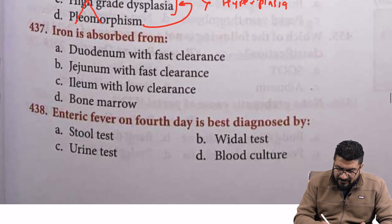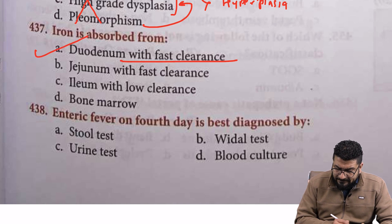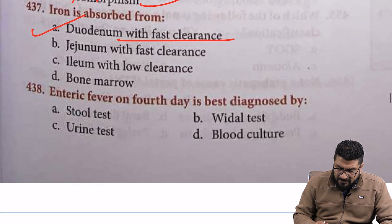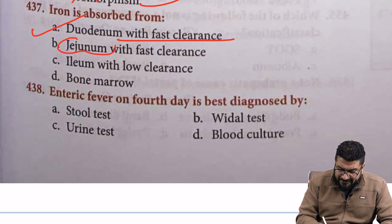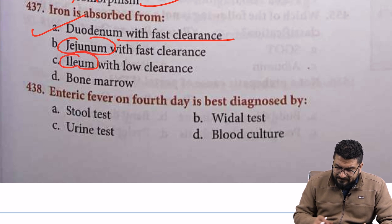Iron absorption occurs in the duodenum with fast clearance. In the jejunum, we have absorption of vitamins. In the ileum, we have absorption of B12.